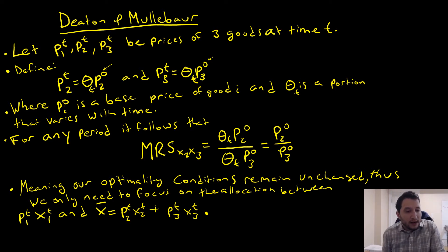We note that for any period, it follows that the marginal rate of substitution is equal to our price ratio. This just goes and knocks out this time term. So we're going to always be having our optimality conditions unchanged, and we can only need to focus on the allocation between P1 and X1 and this other composite commodity here. So really what this means is that we don't have to analyze each one of these goods individually. We can just go and focus on their composite index instead.